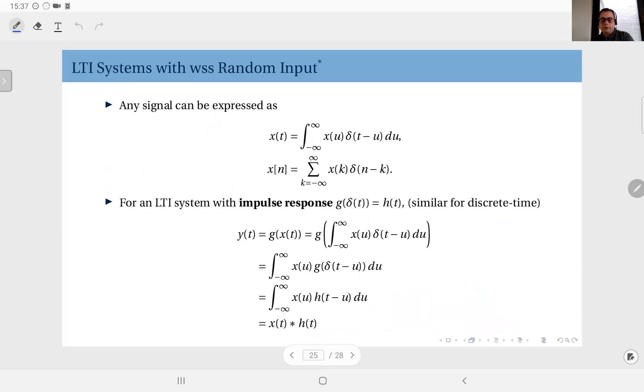So LTI systems are probably the easiest class of systems that we can analyze because we can decompose any signal, continuous time or discrete time, and it doesn't really have to be random or deterministic. We can express them in discrete time as a sequence of the sum of weighted impulses and in continuous time as an integral of weighted Dirac functions.